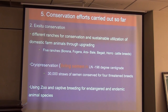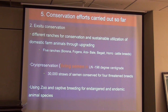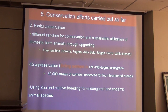For ex-situ conservation, we have five ranches to conserve Boran, Fogera, Arsi-Bale, Begait and Horro cattle breeds. The principle of ranching is conservation, research and development — creating a nucleus flock, selecting the best animals, and distributing them into the community to positively affect the whole breed. We are also employing cryopreservation through semen collection and freezing, but need to do more work on embryo preservation in the future.